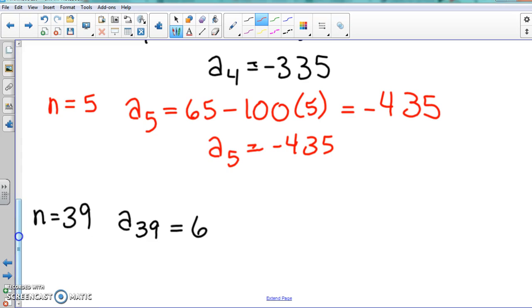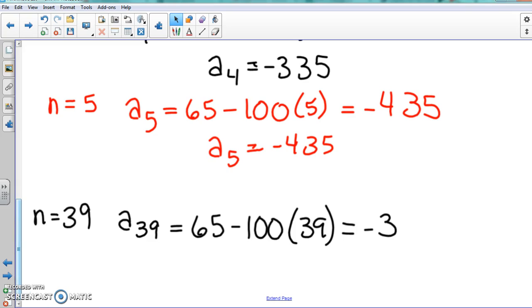So here that means we're going to do 65 minus 100 times 39. And n is 39, so we multiply that off. When we put that into your calculator, you should get negative 3835. Negative 3835. And that's all that she wrote.